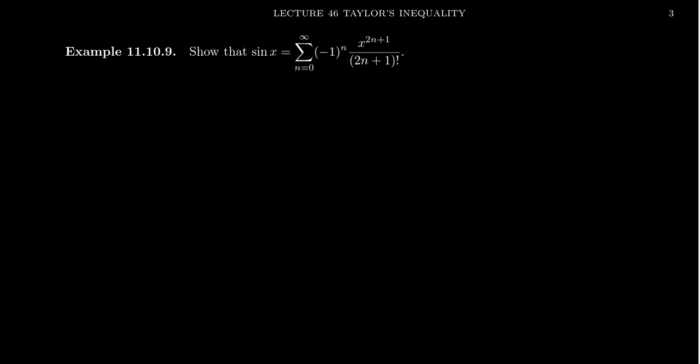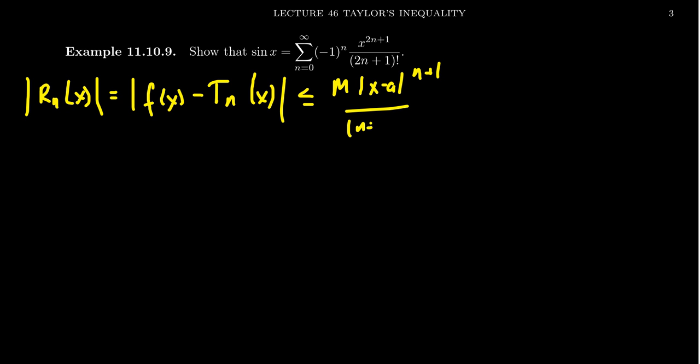The basic strategy we're going to use here is Taylor's inequality, where we can show that the remainder r_n of x, which is the difference between the function f(x) and its Taylor polynomial approximation, is bounded above by m times the absolute value of x minus a to the n plus 1 over n plus 1 factorial.